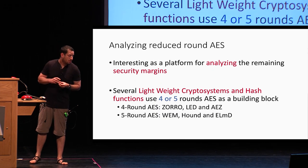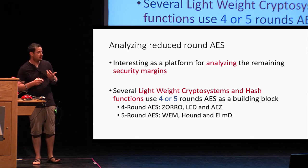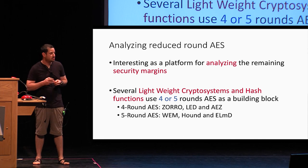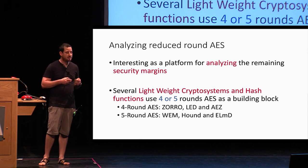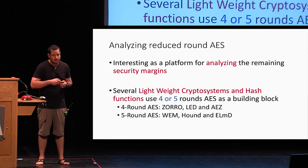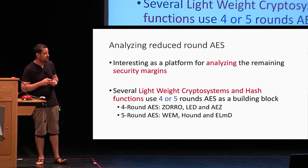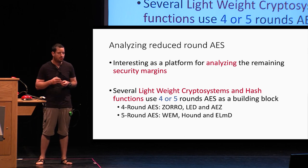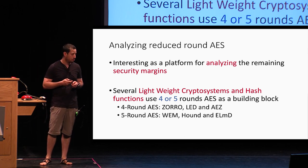What we do is try to analyze a reduced-round AES, and I think it is very interesting because this is the best platform we have to actually analyze what are the remaining security margins. Also, there are several lightweight cryptosystems that use four or five round AES as a basic building block.